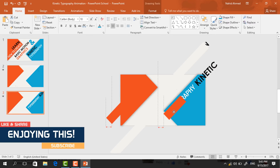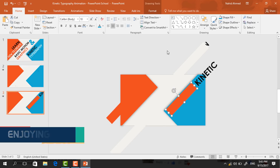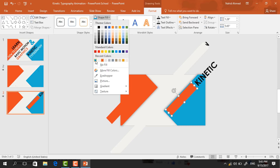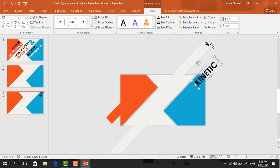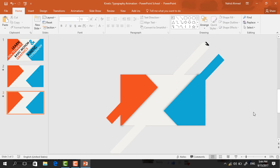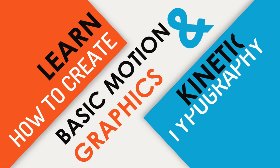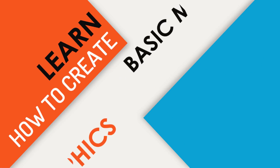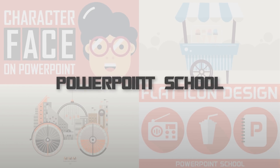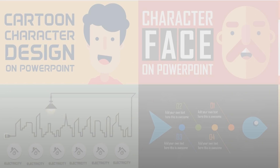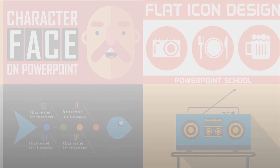Now we need to cover these two text boxes, so make a copy of this rectangle, place it over here, resize it, and change the color from Shape Fill. Right click on this text box and bring it to front. Again make a copy of this rectangle, place it over here to cover it, resize it a bit, and we are done with our animation. You can download this template for free — the download link is in the video description. If you enjoyed this tutorial, make sure you like and subscribe, share with your friends, and thanks for watching.